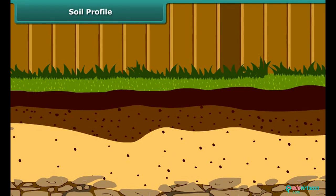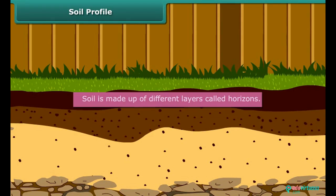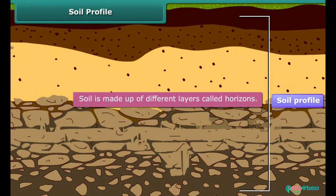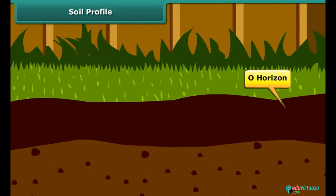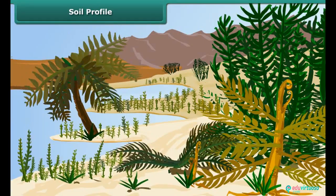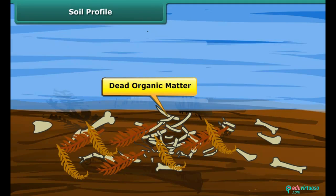Soil profile: Soil is made up of different layers called horizons. Each horizon has its own characteristics. A soil basically has five horizons, namely O, A, B, C and bedrock. The first layer is called the O horizon. This layer contains dead organic matter that lies on the surface. This mostly consists of fallen leaves and decaying animals.